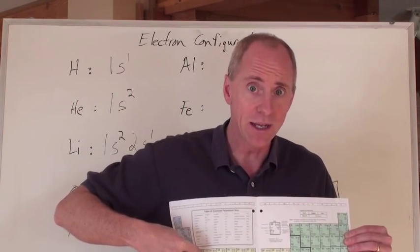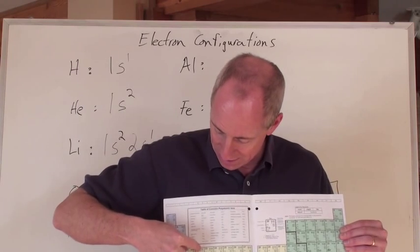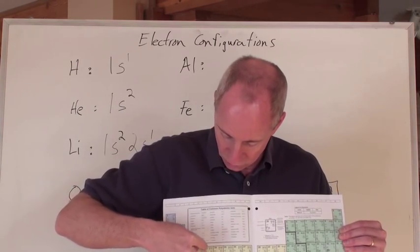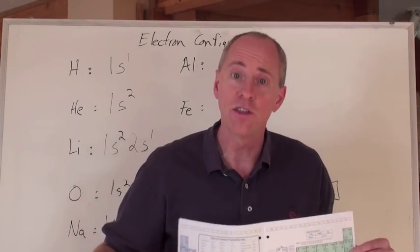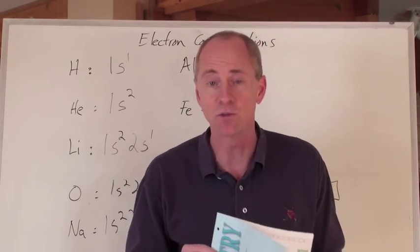Because the d's start at n equals 3, so this is 3d, 3d, 1, 2, 3, 4, 5, 6, 3d6, that's what iron is.